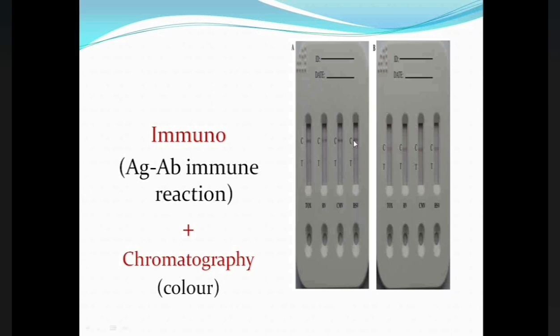As easily seen in this picture, there are two lines: the first is the C or control line, and the second is the T or test line. Here we see a colored line only on the control, and no colored line is seen in the case of the test. By knowing the presence or absence of these colored lines, we can detect or interpret the results of the kit.